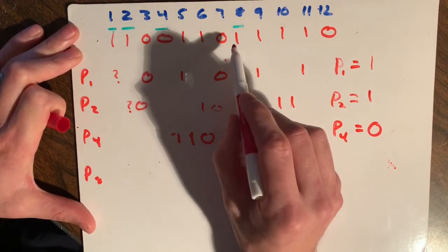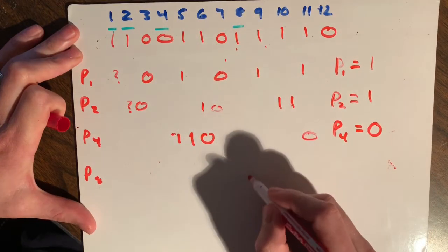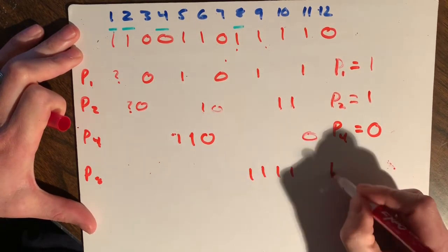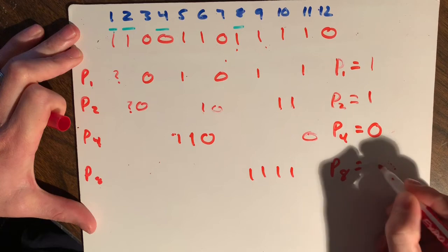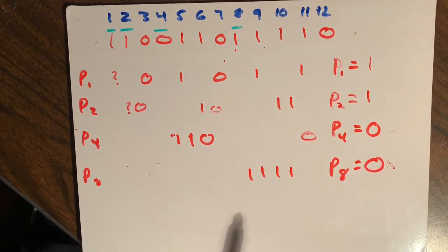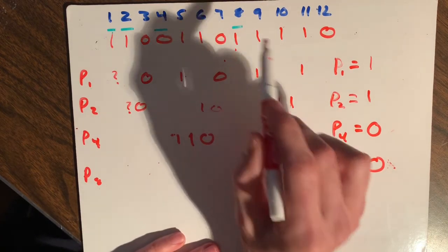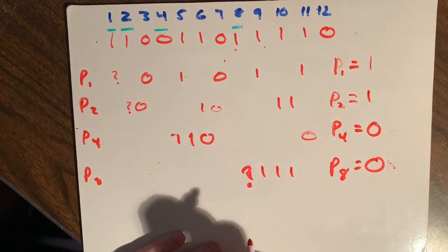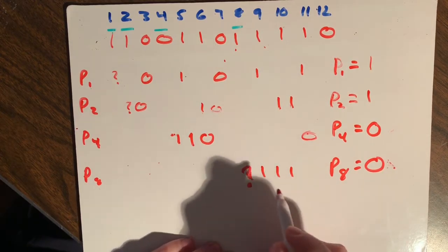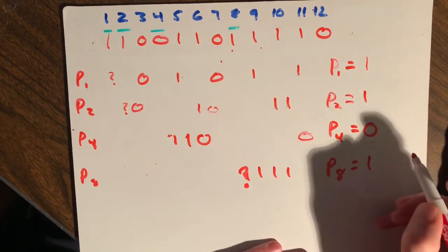Lastly, we have P8. So we have the last eight. So one, two, three, four ones. That's even. So P8 equals zero. Oh, I'm sorry. You don't count the parity bit. So this one should be a question mark. So we actually have three ones. I don't know why I did that.